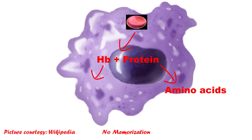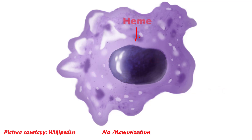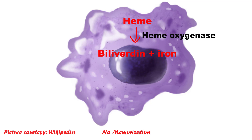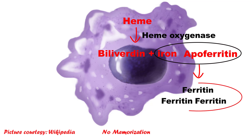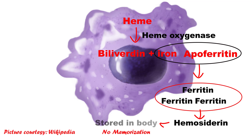Hemoglobin will break down into heme and globin. Globin will eventually break into amino acids and will be reused. Heme will convert into biliverdin and iron with the help of heme oxygenase. Then iron will bind with apoferritin and convert into ferritin. This ferritin is a monomer, and all these monomers of ferritin combine to produce a polymer of ferritin called hemosiderin.